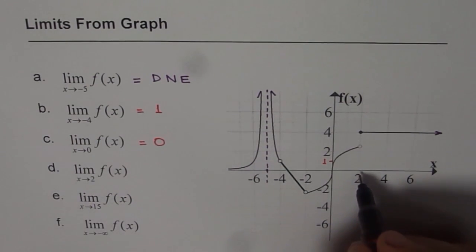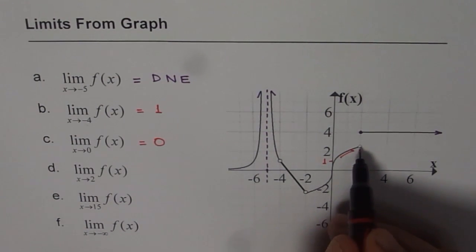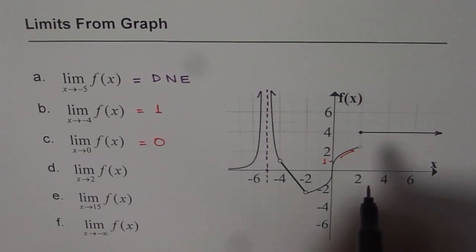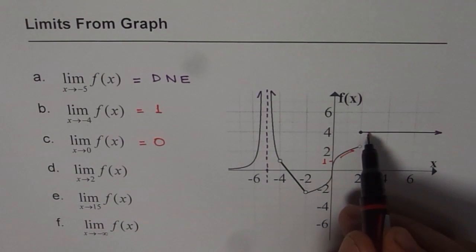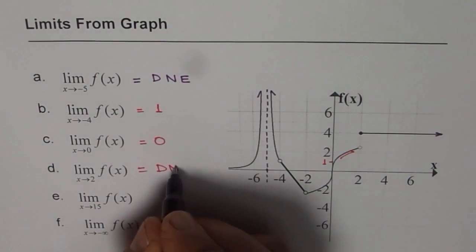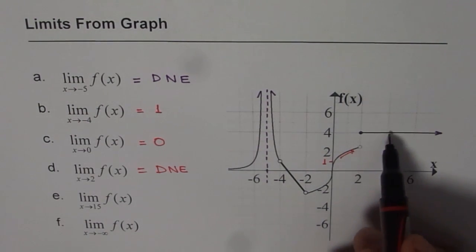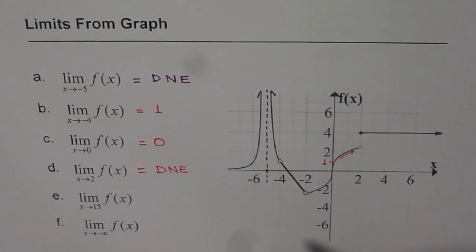x equals 2. If I am approaching from the left side, I am approaching a value which is around 2.5. But if I approach from the right side of 2, I am approaching a value which is 4. Since these two values are not the same, we say the limit does not exist.